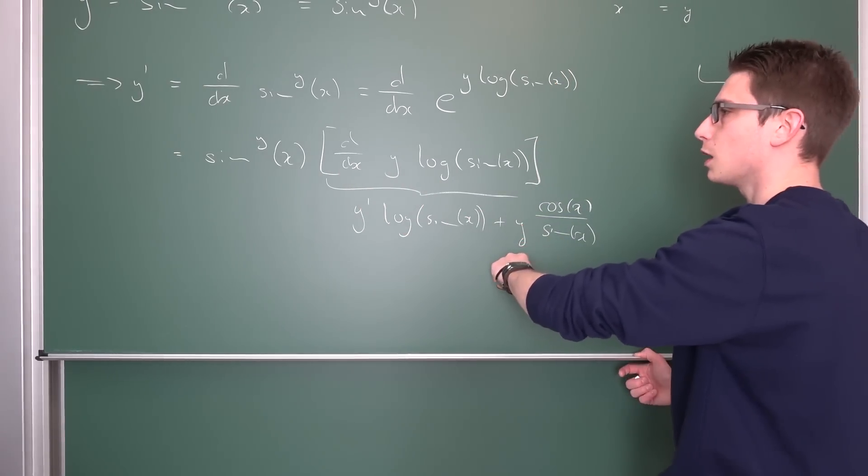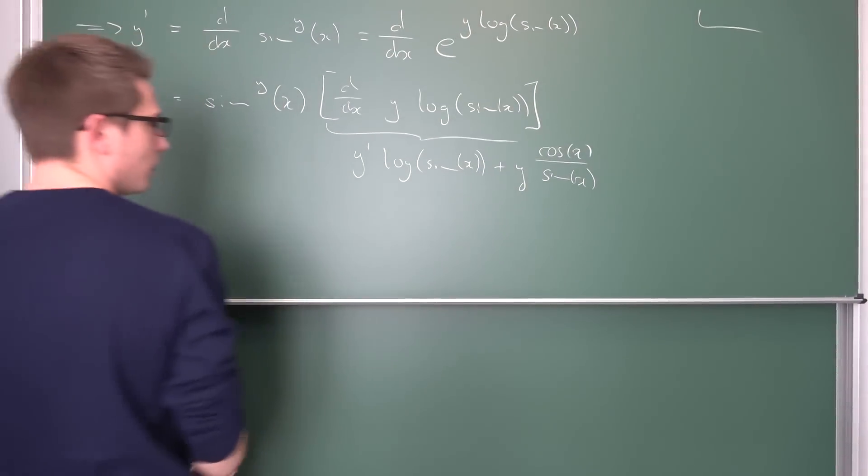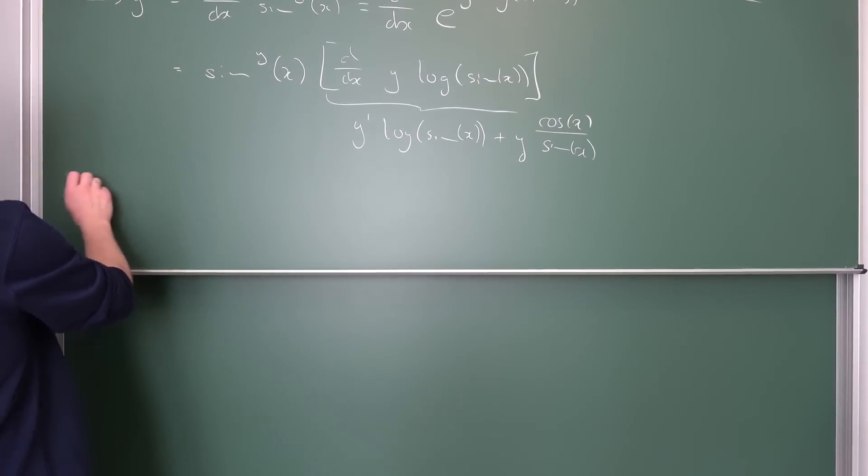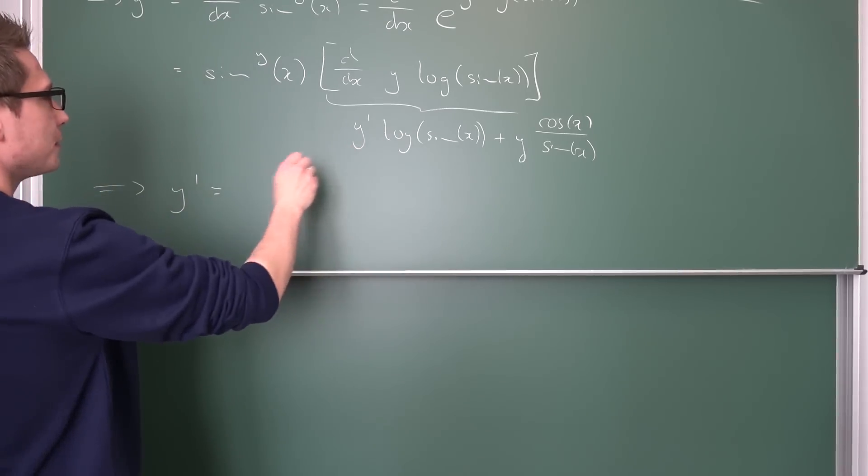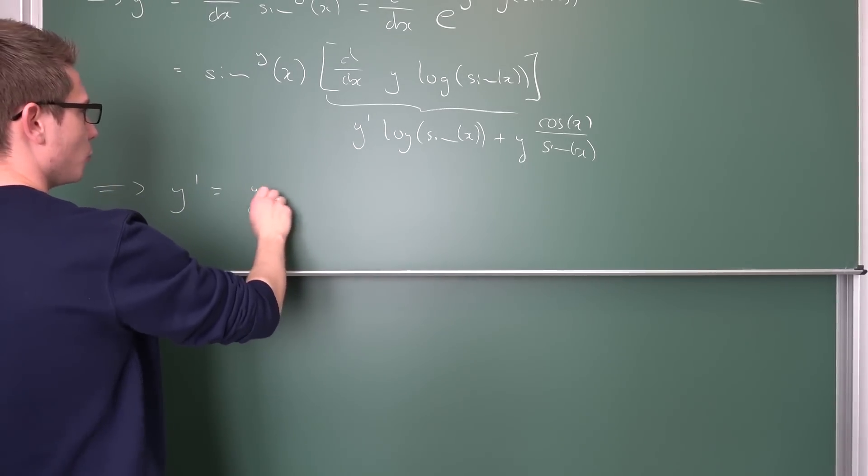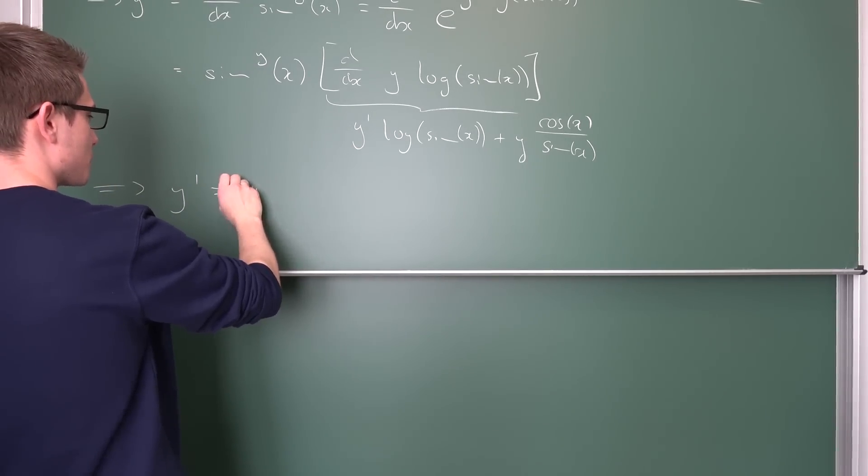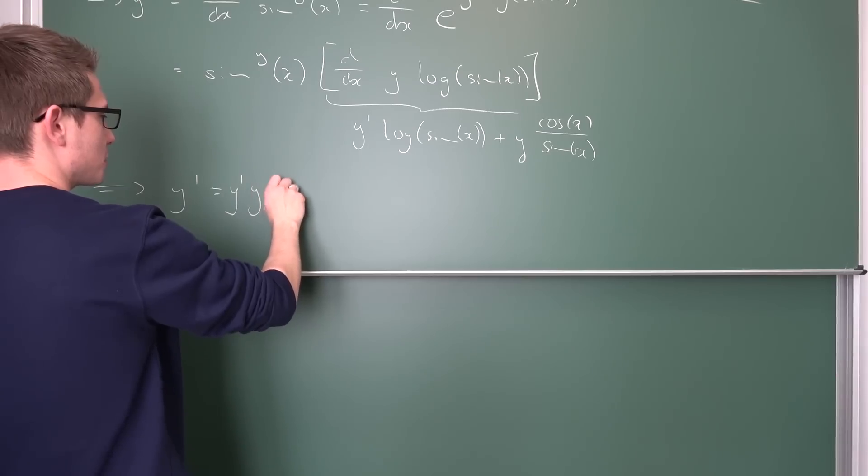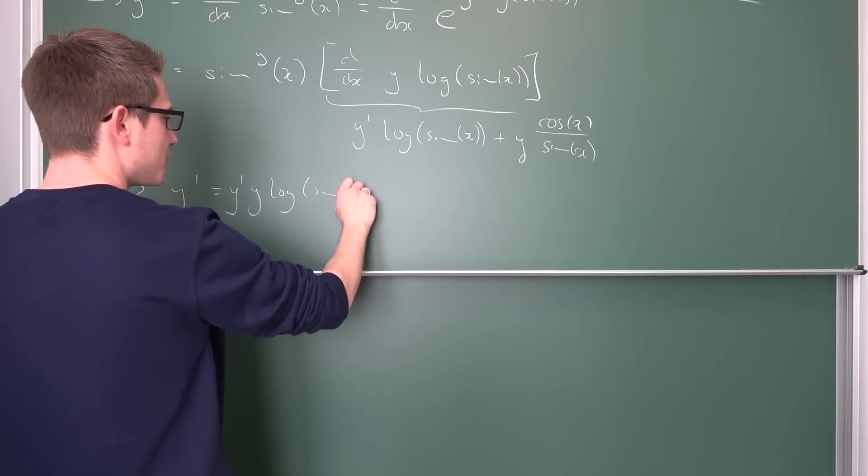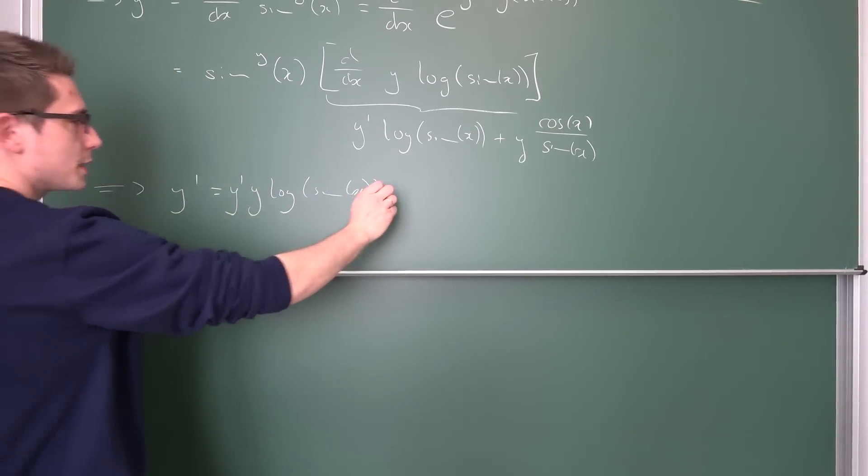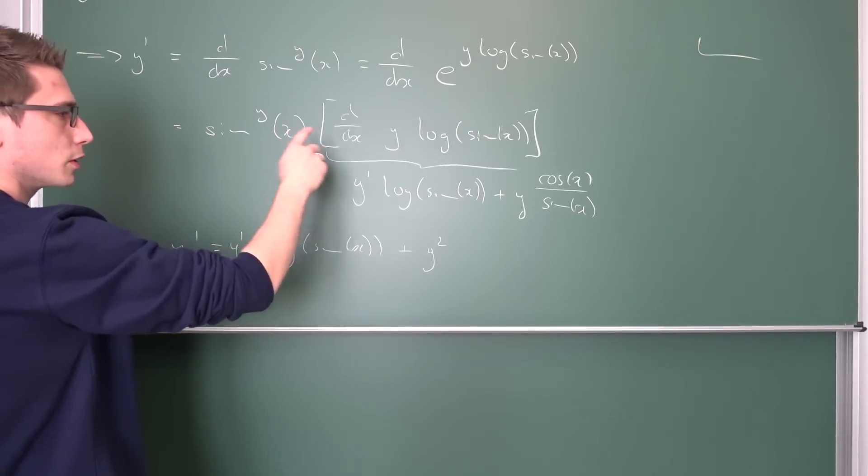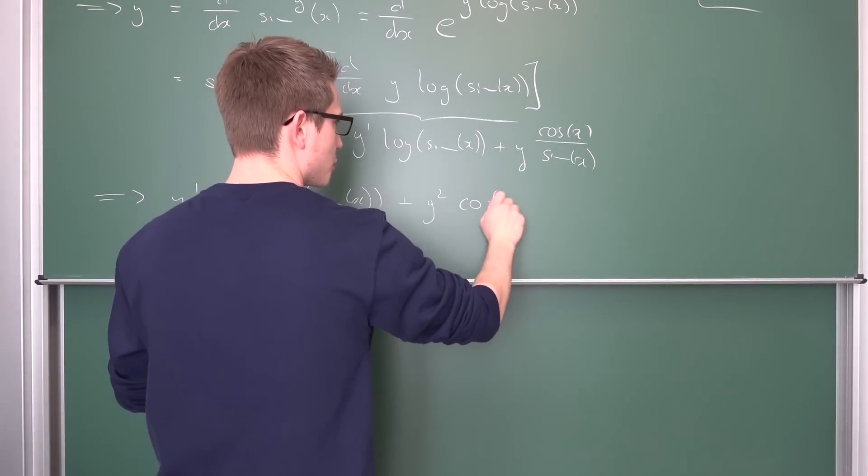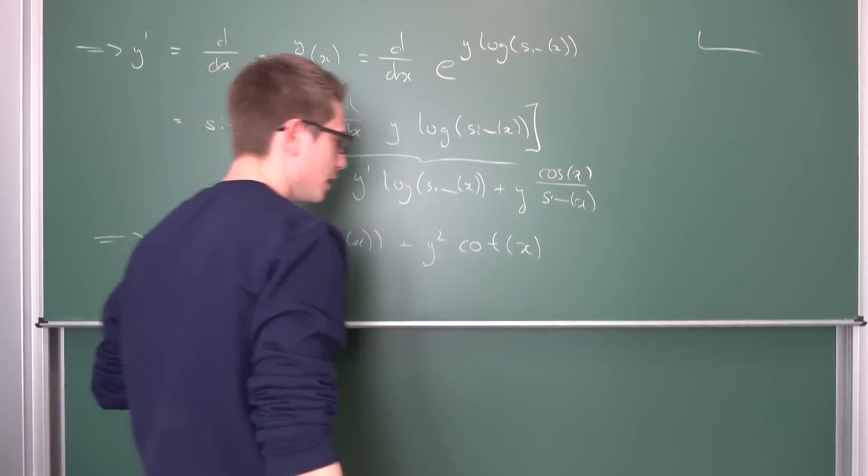Also I don't want to forget, tracking the sine to the y power into here, sine to the y power is the same as y. So yeah, let's write it out. Y prime at this point in time is nothing but, so we are going to have y prime times y times the logarithm of sine of x, plus this is y squared then, right? So y squared times the cotangent of x.